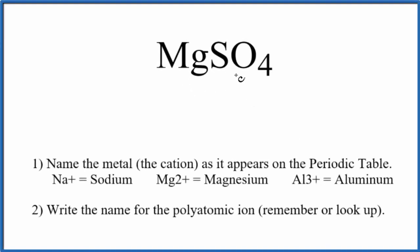To write the name for MgSO4, the first thing we need to realize is SO4 right here. This is the sulfate ion.